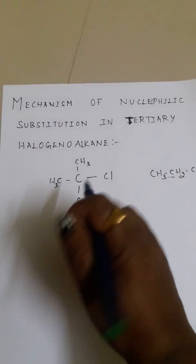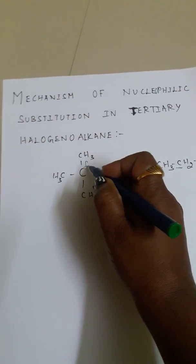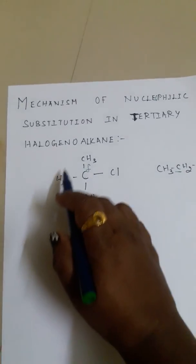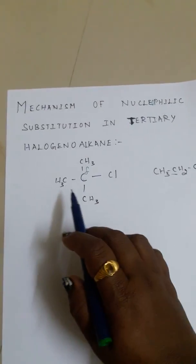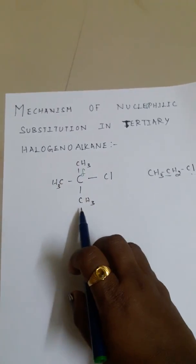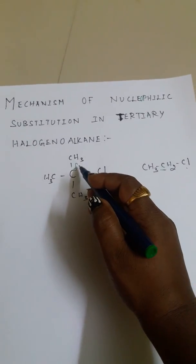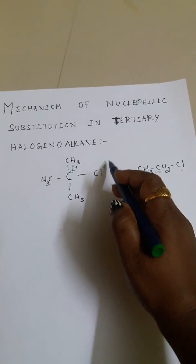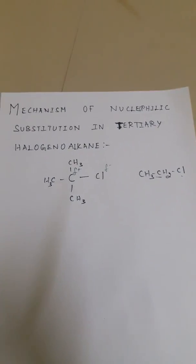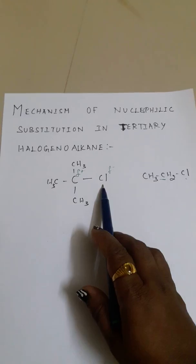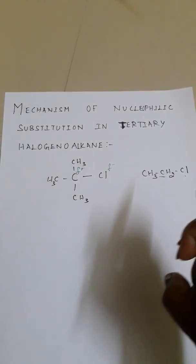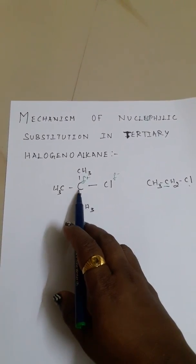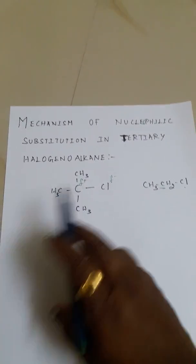The cation is the carbon atom—the carbocation—which is bonded with three other alkyl groups. The anion is delta minus. Chlorine is an electron acceptor and the carbocation is an electron donor.